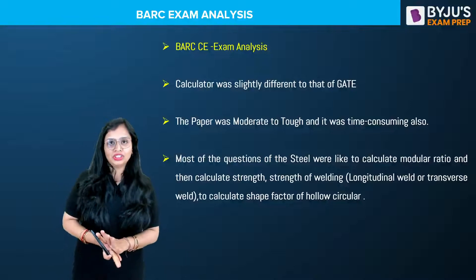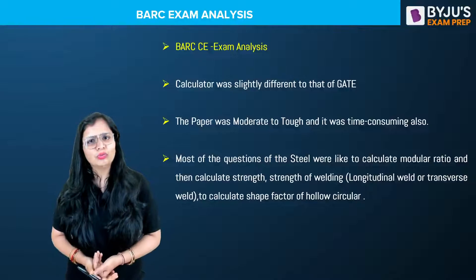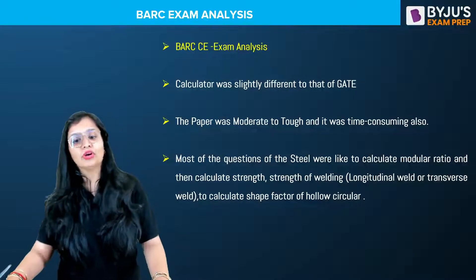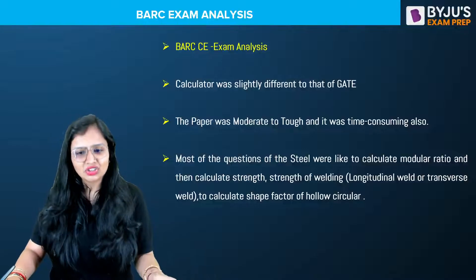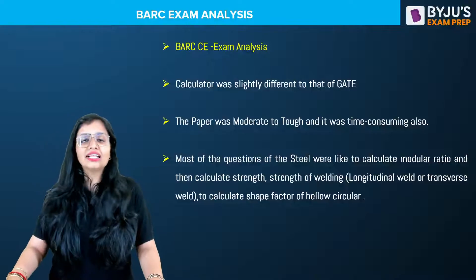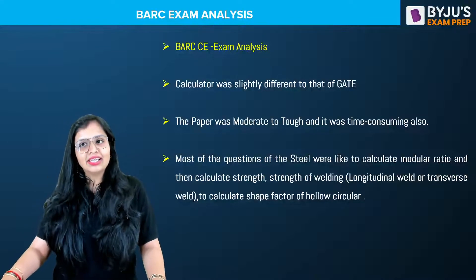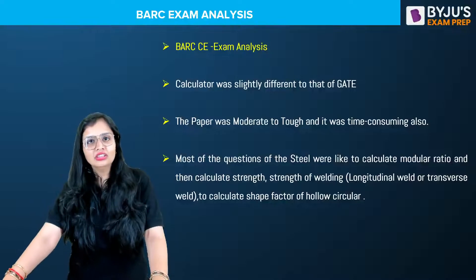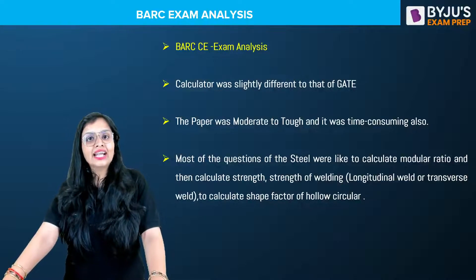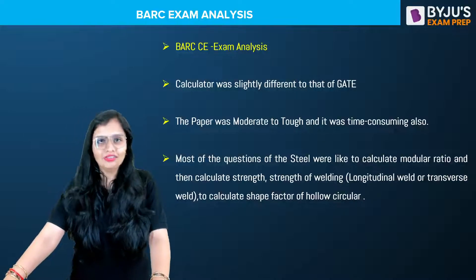Comparing it with GATE, Steel had questions worth merely 2 to 3 marks. But here, you won't believe — they asked questions like modular ratio, calculating strength, strength of welding, shape factor of hollow circular sections, and many more questions related to bolting. There were also portions of gantry girder and plate girders. So Steel had an upper edge for BARC examination as compared to GATE.